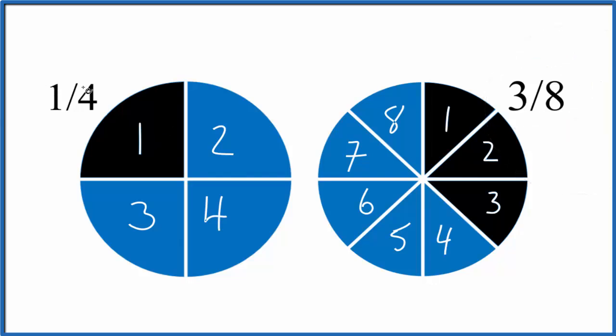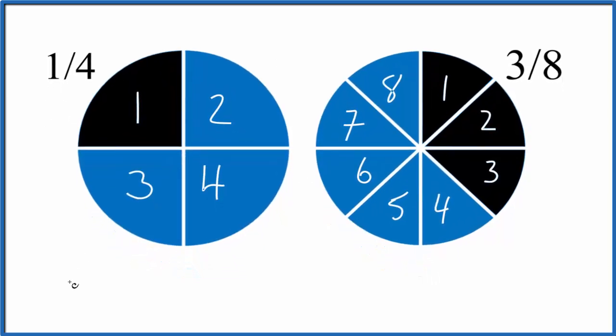We could also divide 1 by 4 and 3 by 8 and compare the fractions. So let's divide 1 by 4. That'll give us 0.25. And 3 divided by 8, that equals 0.375. Let's call that 0.38.